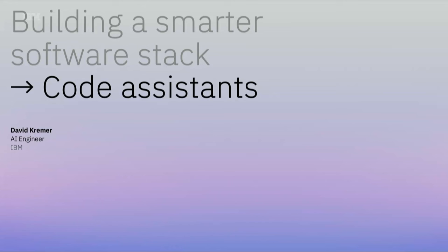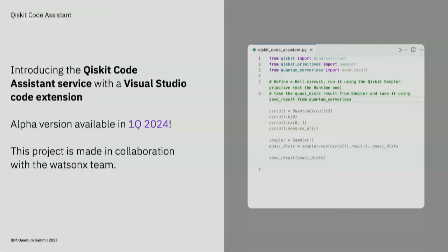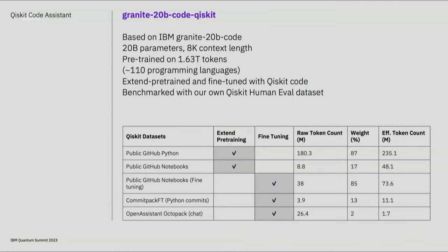Thank you, Ismail. So as Dario showed this morning, we're excited to introduce our AI-powered Qiskit code assistant. This is a powerful tool that will help you learn the best ways to use Qiskit and IBM Quantum services and boost your quantum productivity with code completion and suggestions. The alpha version of this Qiskit code assistant will be available through a VS Code extension in the first quarter of 2024. The AI code assistant has been trained on millions of lines of code generated by the IBM Quantum team and community over the past few years, as well as all of our documentation and tutorials. The model is based on our own IBM Granite 20B model with 20 billion parameters and 8,000 context length, and it's fine-tuned with the latest version of Qiskit code and benchmarked with our own human eval dataset.